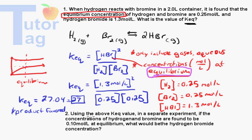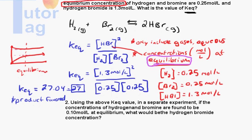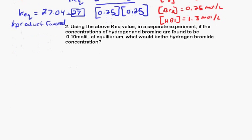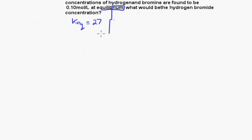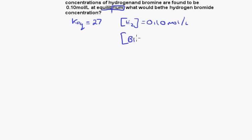The Keq is greater than 1, so it's product favored. That's the first question. The second question says: using the above Keq value — so Keq equals 27 — in a separate experiment, if the concentrations of hydrogen and bromine are found to be 0.10 mol/L at equilibrium (remember, at equilibrium is important), the concentration of H2 equals 0.10 mol/L and the concentration of Br2 equals 0.10 mol/L.